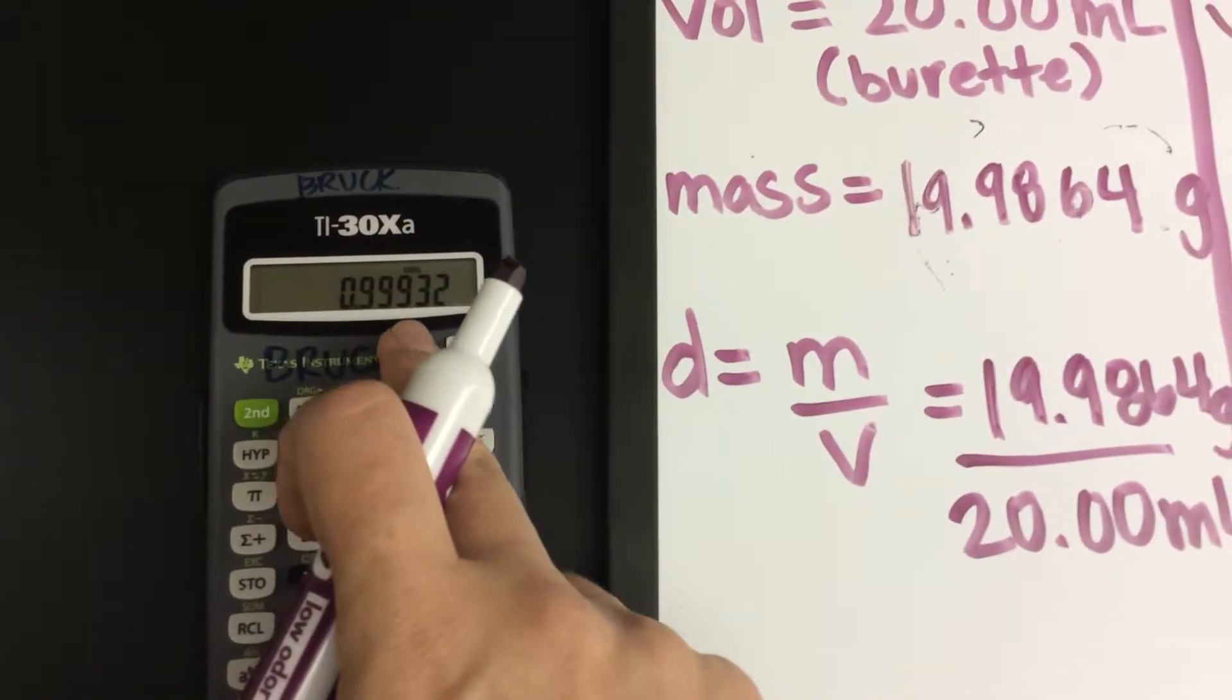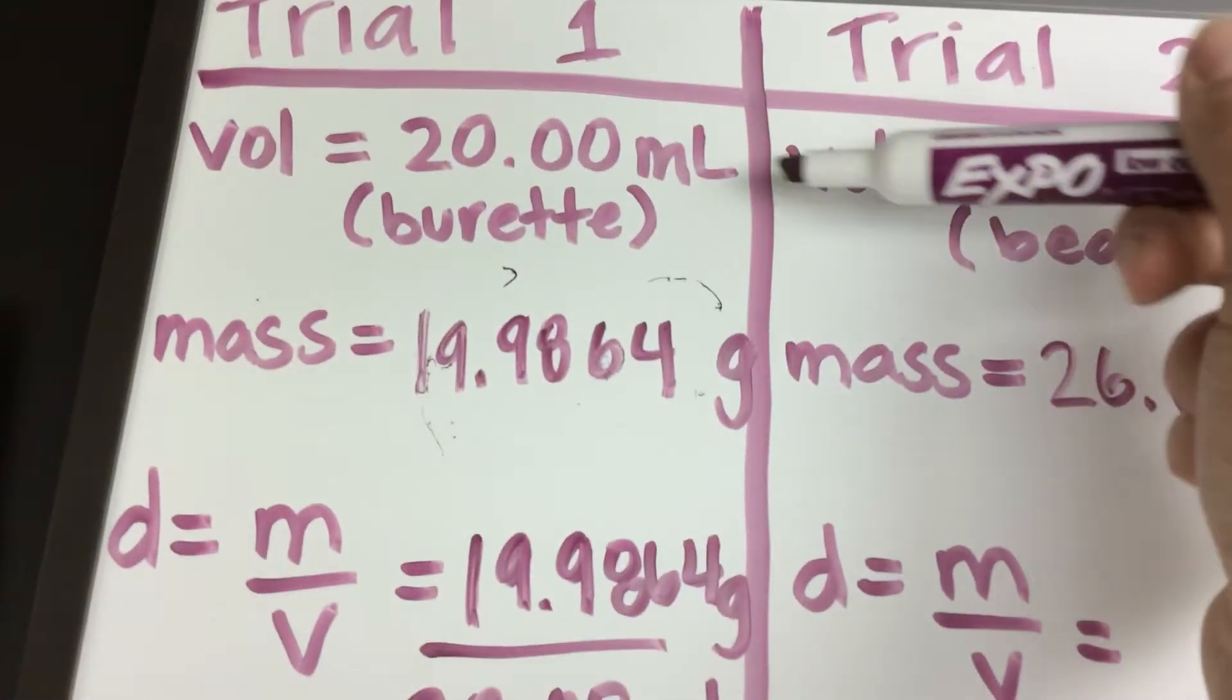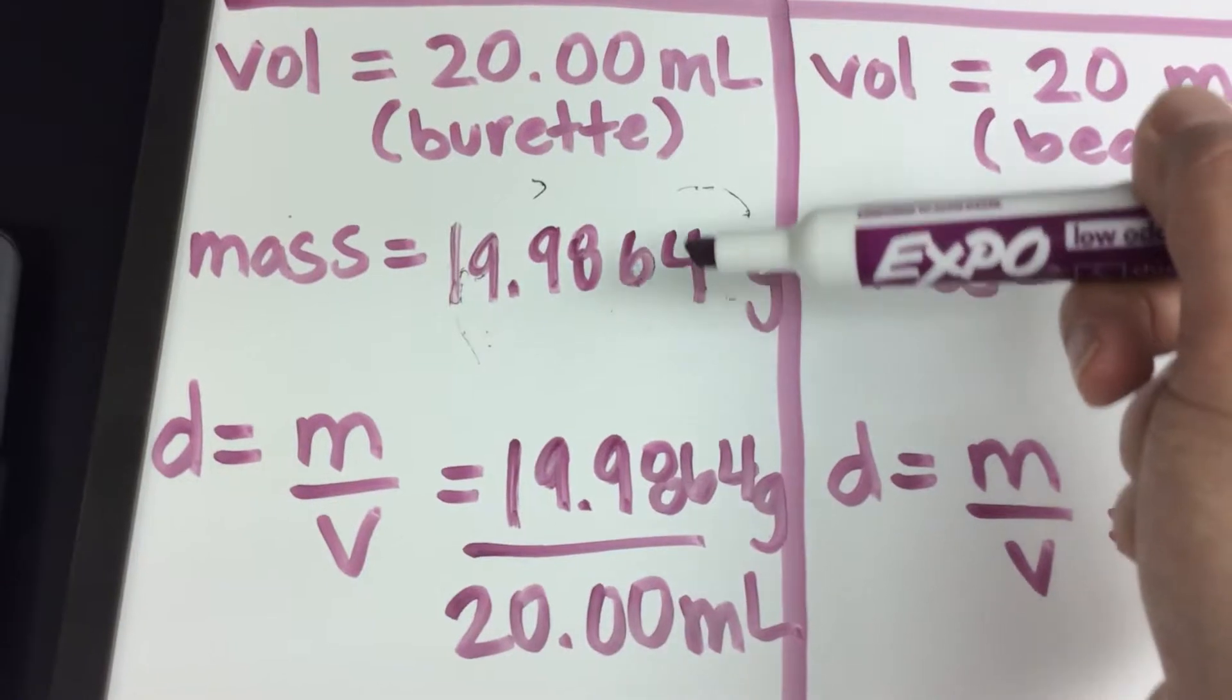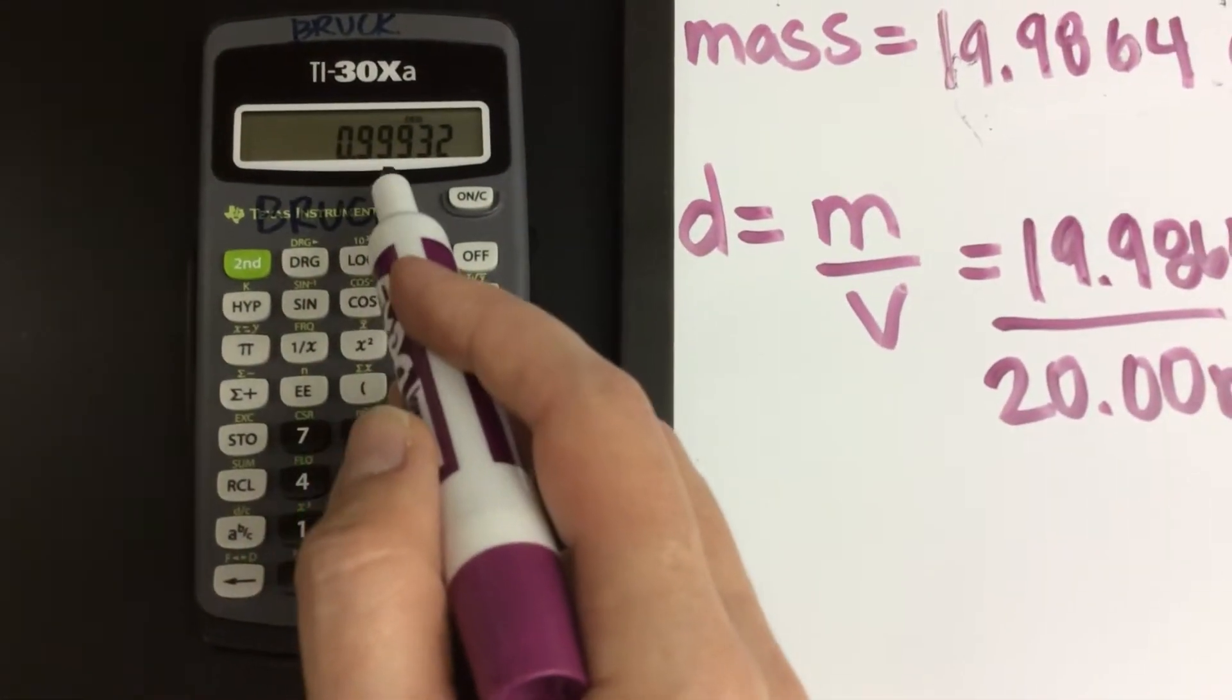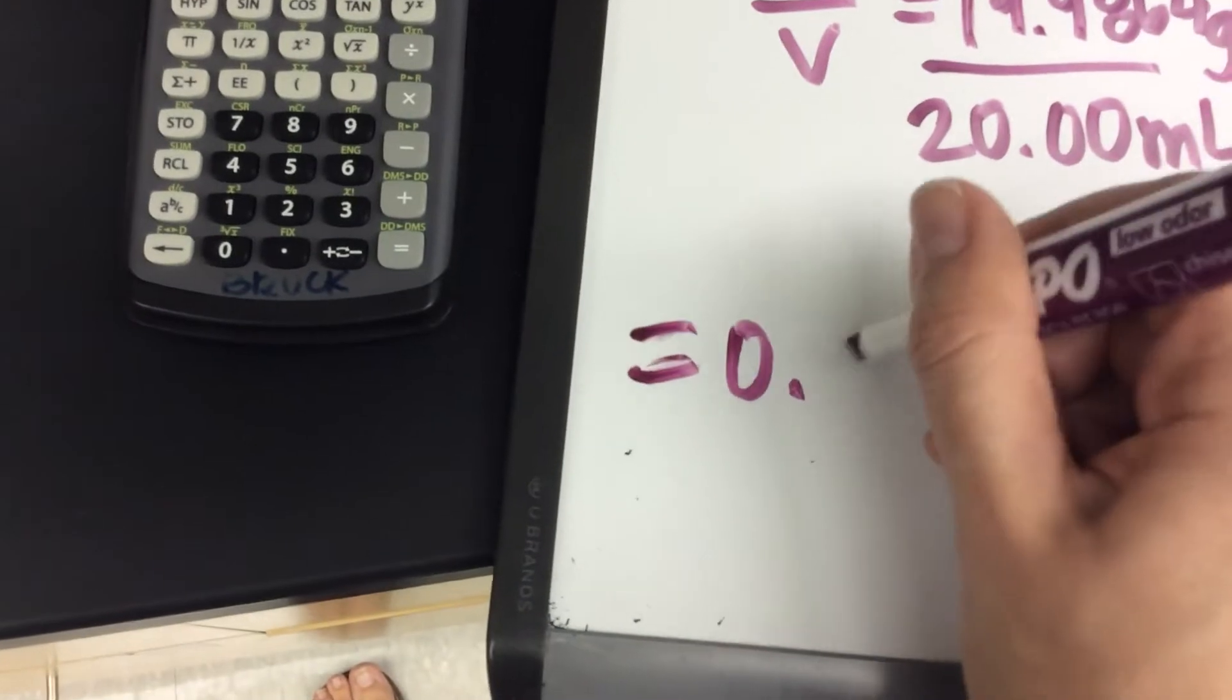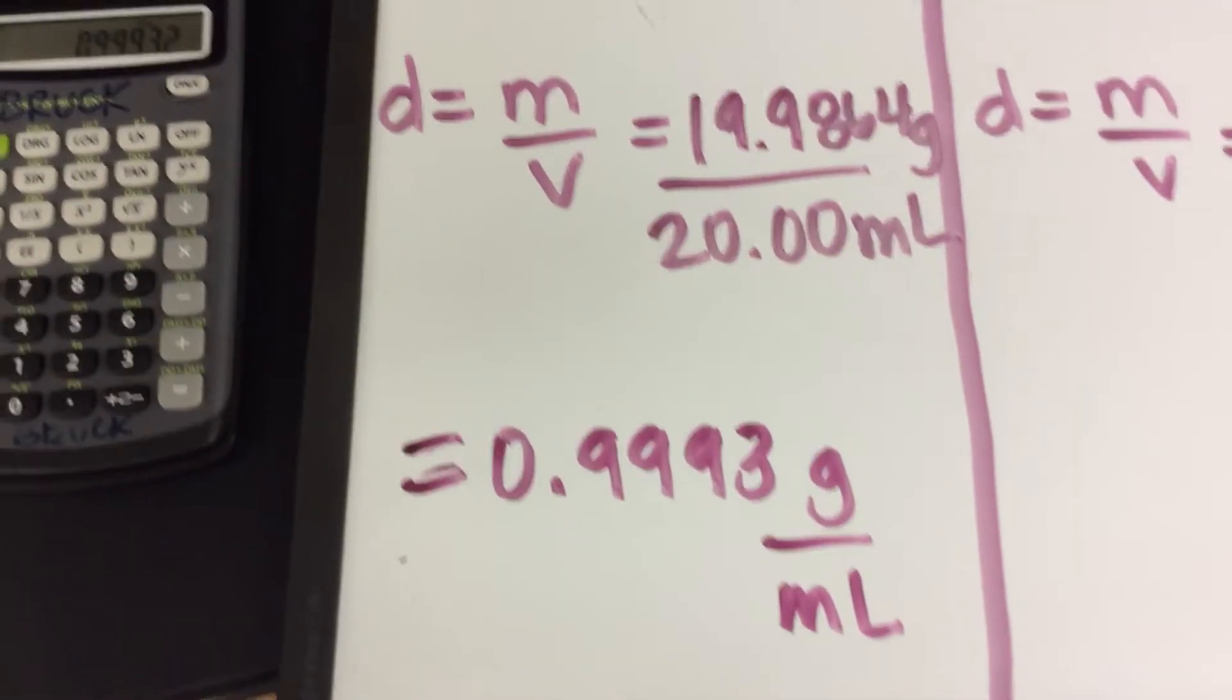So there's my answer, 0.99932. Now I round my final answer to the least number of total significant figures. My volume had four sig figs. My mass has six sig figs. So my final answer gets rounded to four total sig figs. So that would be 0.9993 grams per milliliter.